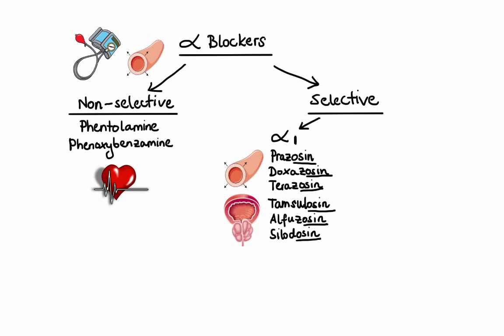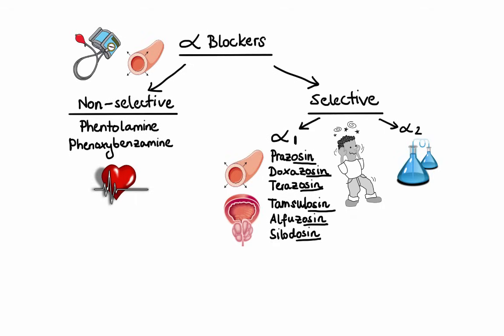When it comes to side effects, orthostatic hypotension is one of the main concerns when initiating an alpha-1 blocker, although it's not as severe as that observed with non-selective alpha blockers. Additionally, vasodilation produced by alpha-1 blockers can lead to headaches and nasal congestion. As for alpha-2 selective blockers, they have very limited clinical application in humans and are used mainly in research. One example you might encounter is yohimbine, which can be found in some dietary supplements.